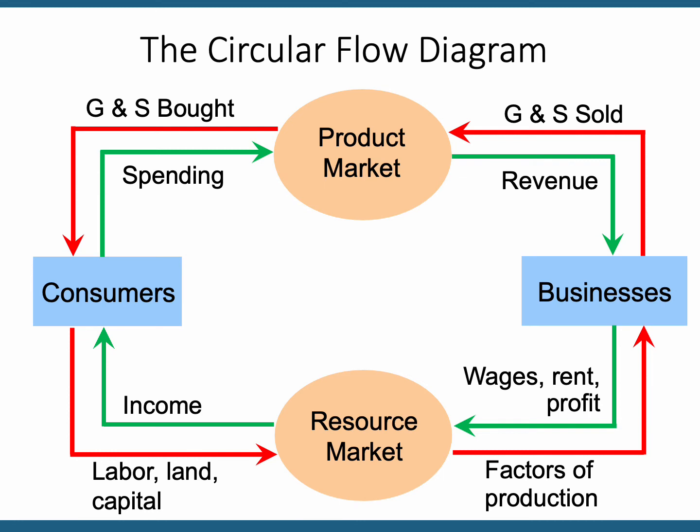Businesses are paying for the resources they use to produce their products in the form of wages and salaries to employees, rent for anything they're leasing, and profit for the capital they need and are using. These are all different forms of income that go to individuals, consumers, and households.